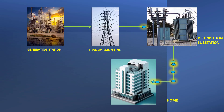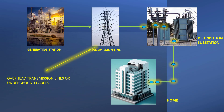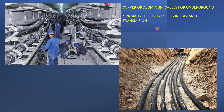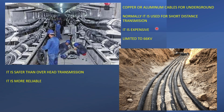The next component is the transmission line, which may be either overhead lines or underground cables. Electricity is transferred from the generating station to the distribution substation through these lines. Underground cables may be directly buried in the ground or placed in a trench, and are made of copper or aluminum. Underground cables are generally used for short-distance transmission, as they are difficult to install and expensive for longer distances. Their voltage-carrying capacity is generally limited to 66 kV, since effective insulation above that is difficult to achieve. However, they are safer and more reliable than overhead transmission.